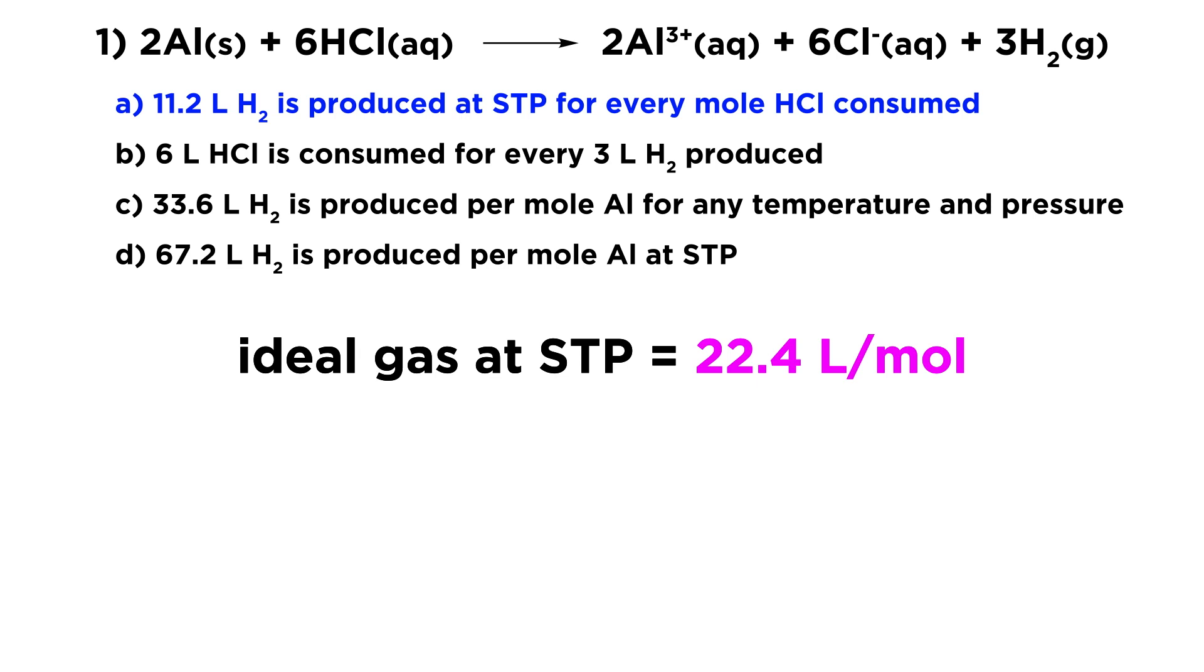Let's just quickly take a look at each other option to make sure that none of those will be the case. Option B says six liters of HCl is consumed for every three liters of H2 produced. This one we know is just not going to work because HCl is not an ideal gas. That's hydrochloric acid. This is an aqueous species. So we're not able to apply this rule about 22.4 liters. That is for ideal gases.